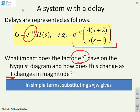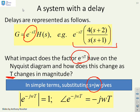The algebra is quite simple. What we're going to do is just replace s equal jω as normal. Plug it into the e to the minus sT, and this is what you get. You get a modulus of e to the minus jωT, which is 1. And the phase of e to the minus jωT is minus ωT.